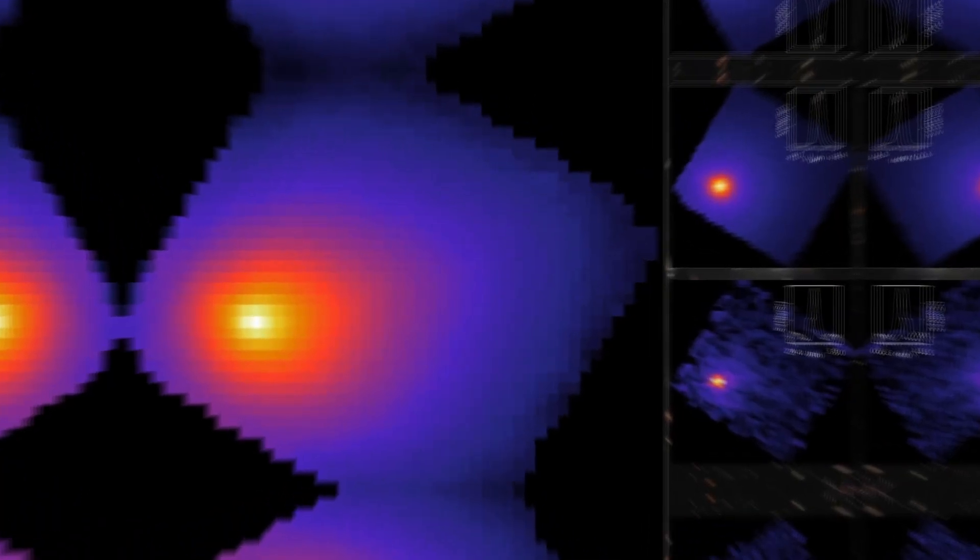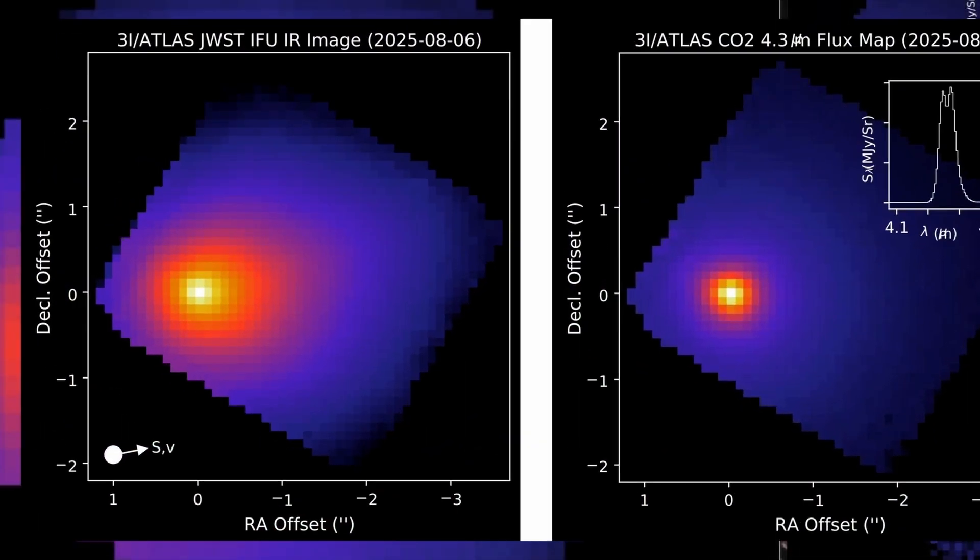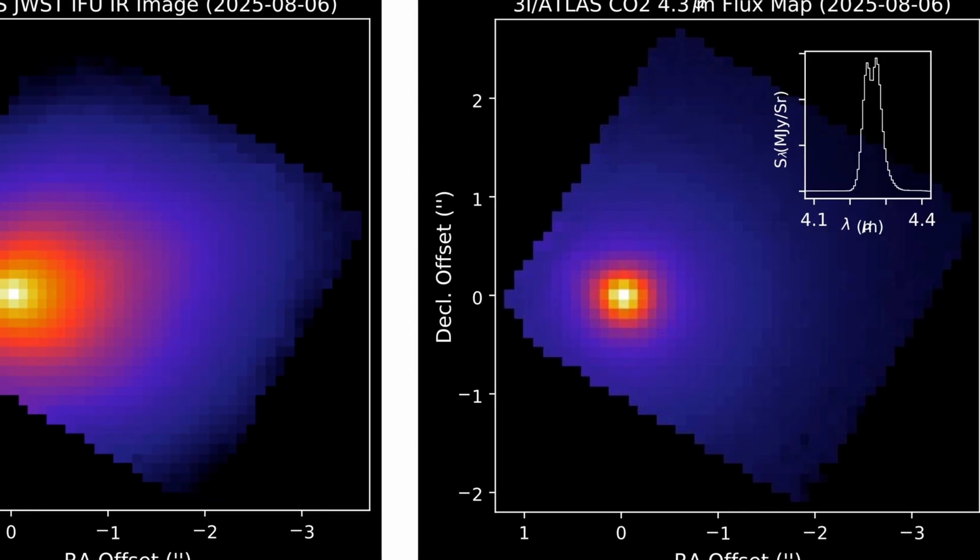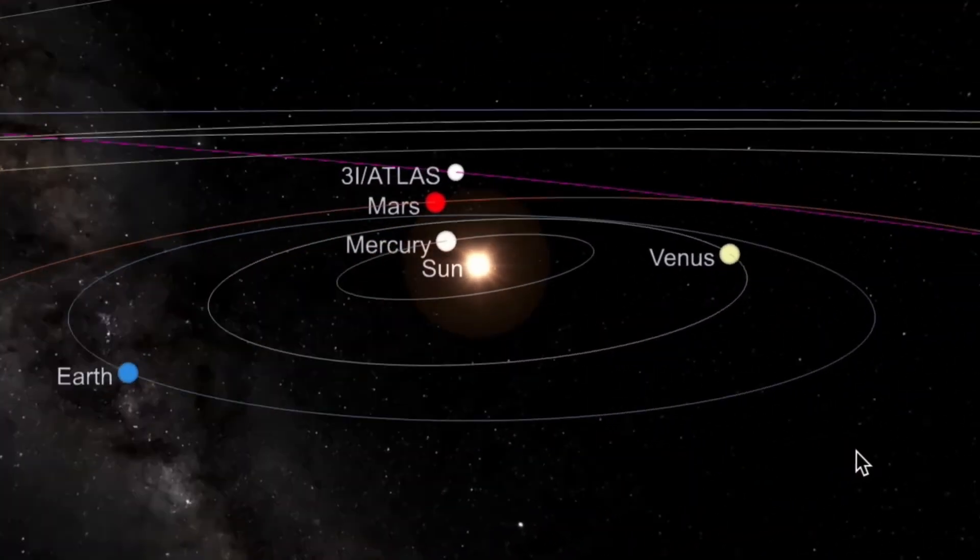Early spectra showed an overwhelming dominance of carbon dioxide, far greater than in any known comet. Its coma glowed strangely blue, not the dusty yellow-white we expect from icy wanderers, but an electric, luminous blue.